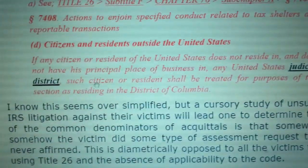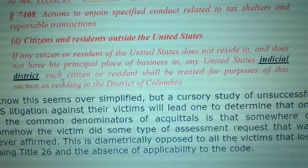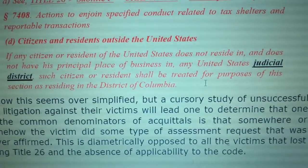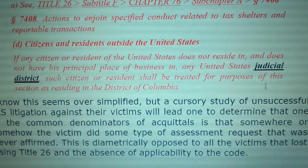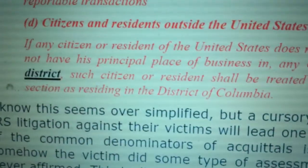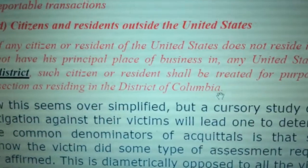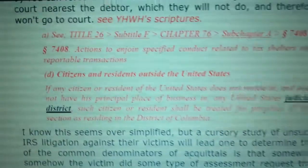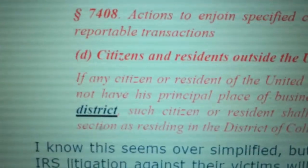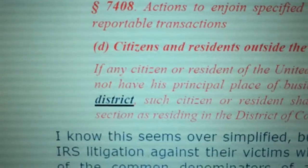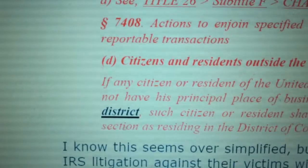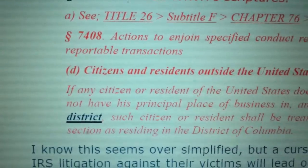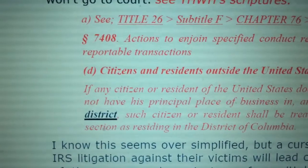Any United States judicial district — such citizen or resident shall be treated for purposes of this section as residing in the District of Columbia. So you live in the District of Columbia if you're a U.S. citizen. You can claim it was a PSYOP. U.S. citizen is bad — that means taxpaying slave with a number, a slave number.